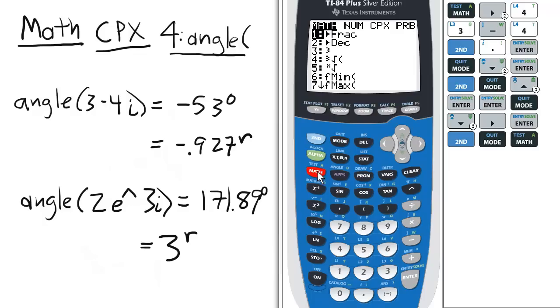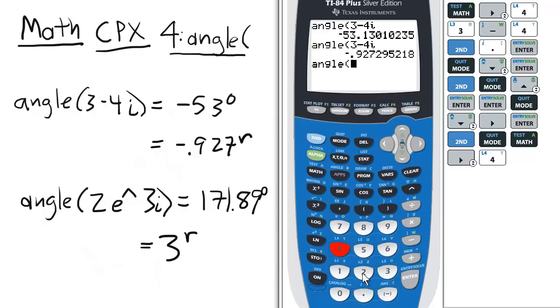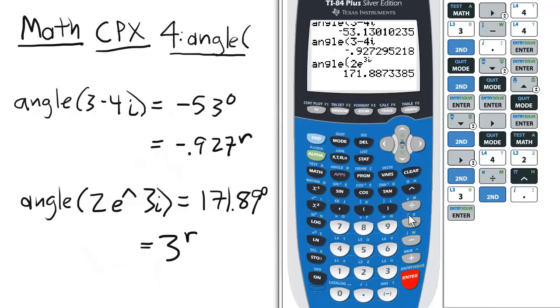We'll go to the math menu, go to complex, choose option 4, and this time we'll enter 2e raised to the 3i, and in degrees it's approximately 171.89.